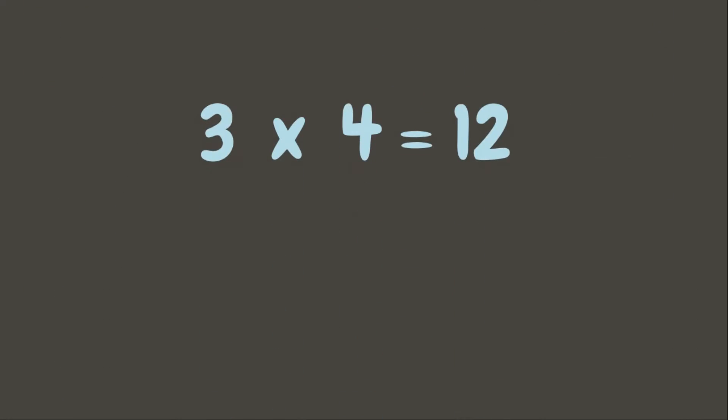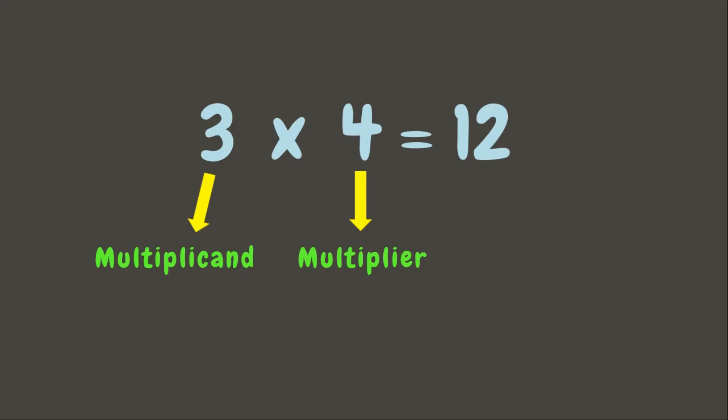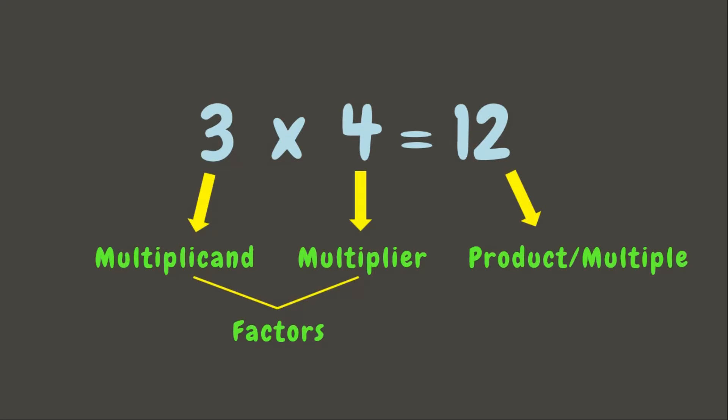Before we begin, let's have a quick recap on the parts of multiplication. The first number, or the number that is being multiplied by another number, is the multiplicand. While the second number, or the number that multiplies the multiplicand, is the multiplier. These two are called factors, while the answer is what we call the product or the multiple. Now that you have reviewed the parts of multiplication, you are now ready to start our lesson.